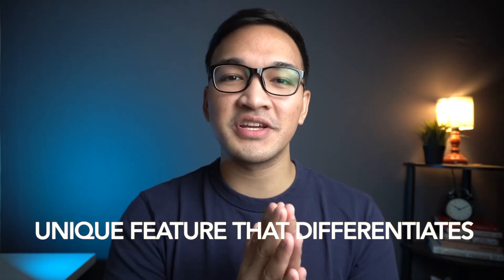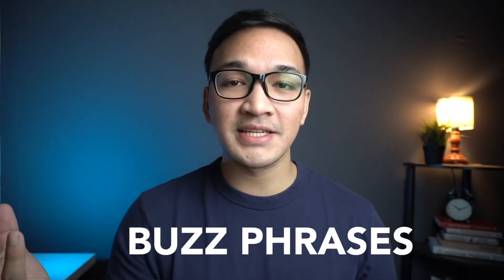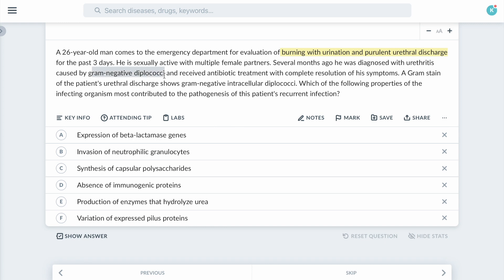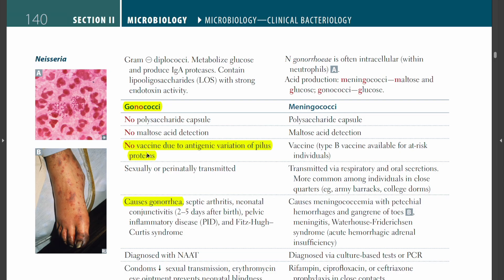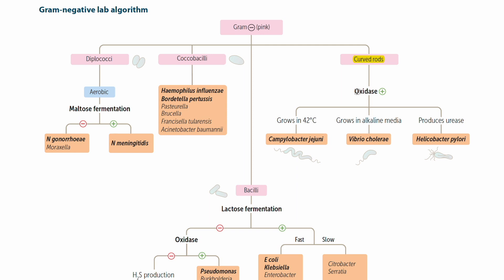You also have to remember the unique features of a specific organism causing a specific disease, because in microbiology there will almost always be a unique feature that differentiates that bug from the others. It's very important to know those unique features — what some call buzzwords or buzz phrases — because as you go through a question stem and recognize that buzzword, you will instantly recall the organism or disease. For example, in gram-negative bacteria classification, a curved rod that is oxidase-positive and produces urease is H. pylori. Other oxidase-positive curved rods like Campylobacter and Vibrio each have their own unique characteristics that set them apart.